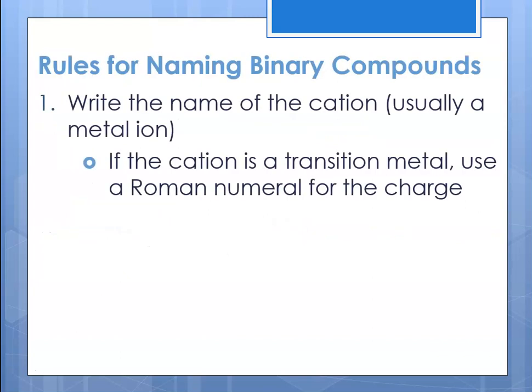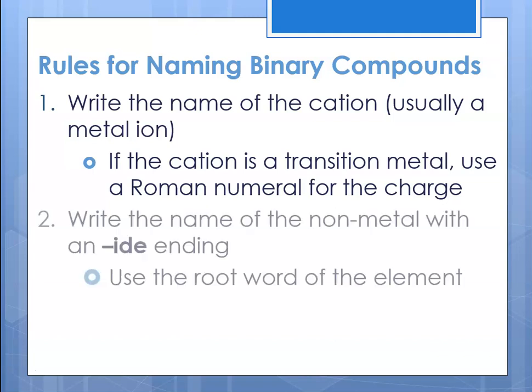The rules for naming binary compounds: first, write the name of the cation, which is usually a metal. If the cation is a transition metal, you'll use a Roman numeral to indicate which charge it has. Then, write the name of the nonmetal — the anion — and if it's binary you give it the -ide ending. The -ide is chem-speak for 'this is a binary compound,' and in that case you use the root word of the element.